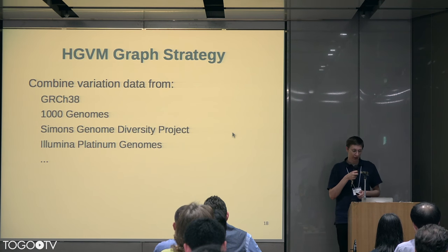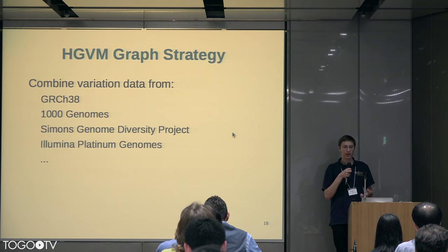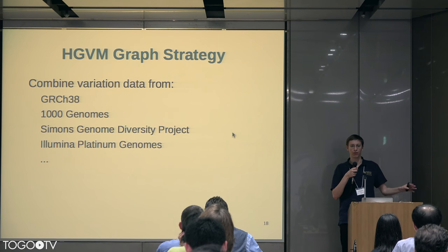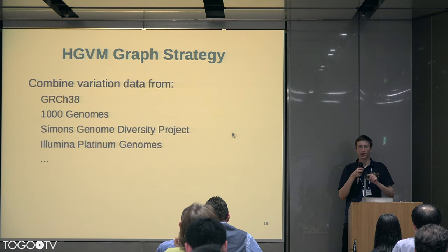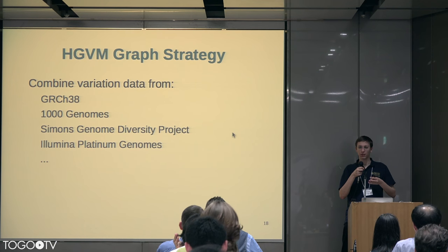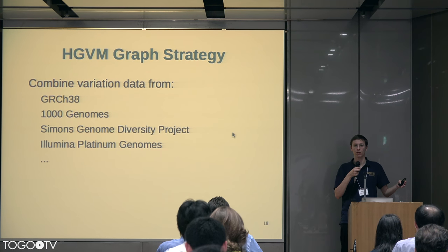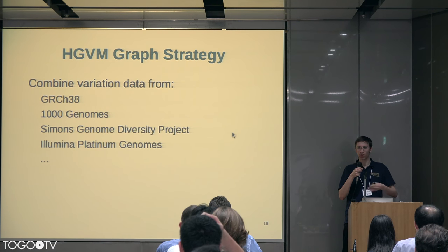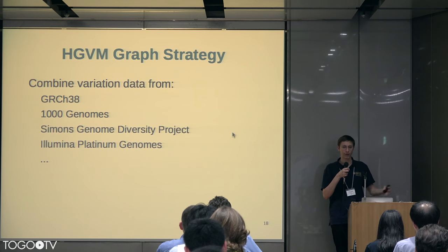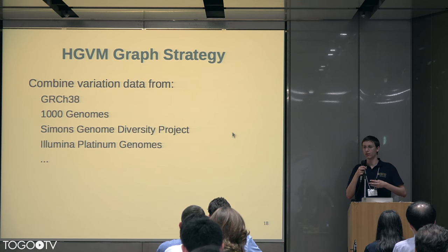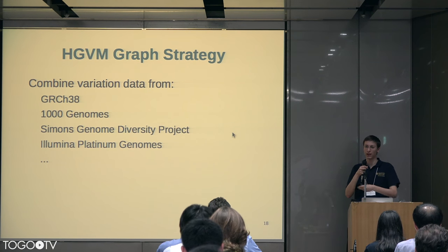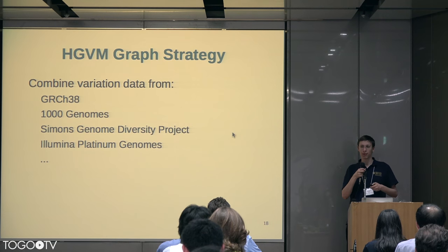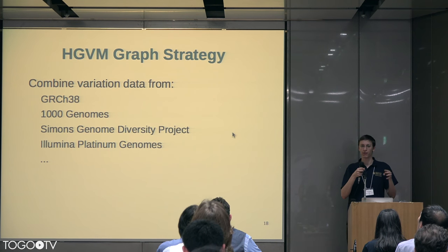Our strategy for getting there is based around combining various data sources. We want to pull in the GRCh38 reference build with the linear reference and also with these alt-loci sequences. We want to pull in the 1000 Genomes variants, and some newer variant compendia like the Simons Genome Diversity Project, and also Illumina's Platinum Genomes data that goes deep on a few genomes.